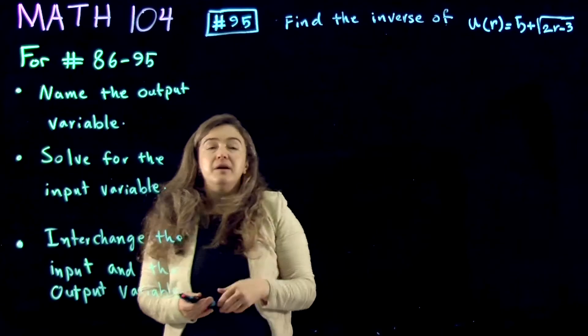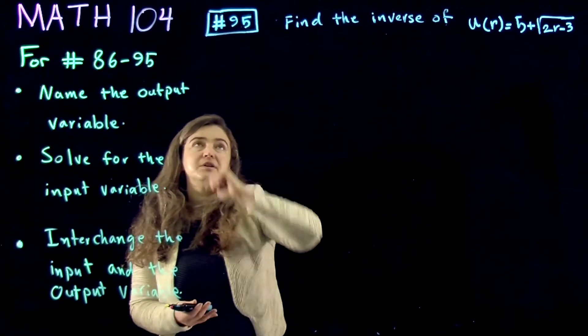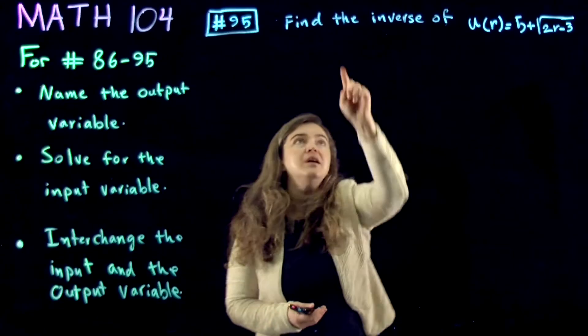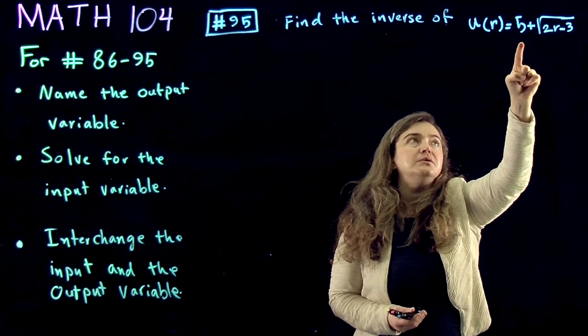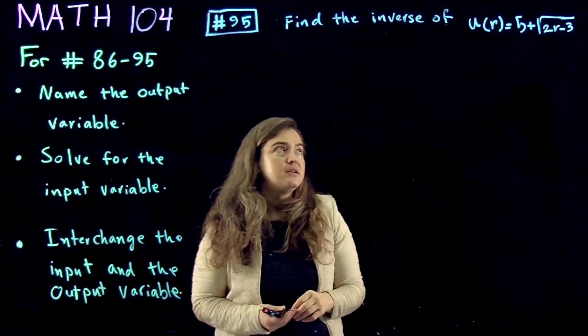We're continuing with our Math 104 gateway questions, number 95, out of the set 86 to 95. Find the inverse of u of r equal to 5 plus square root of 2r minus 3.